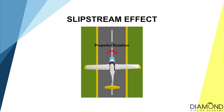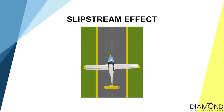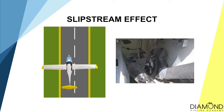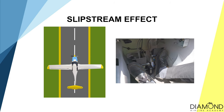Now let's imagine we are lined up on the runway and ready for take-off. Apply full power by pushing the throttle all the way forward. The engine will produce maximum power and the propeller will spin up. Because the propeller is rotating, the accelerated air will rotate as well, go around the fuselage, and hit the left side of the vertical stabiliser, creating a left yawing tendency. Therefore, some right rudder is required to maintain centre-line tracking.